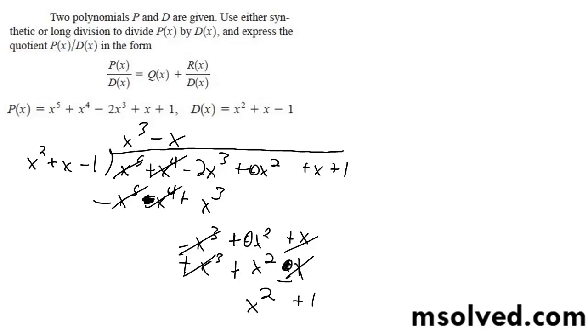And then x squared goes into that plus one times, so we get plus x squared, plus x, minus one.